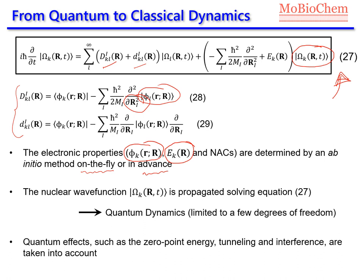On the other side, this is the exact solution of the time-dependent Schrödinger equation, so we take into account quantum effects such as the zero-point energy, tunneling, interference, and all the quantum effects you can imagine. Equation 27 is the exact time-dependent Schrödinger equation, and if we solve it, we take into account all quantum effects.